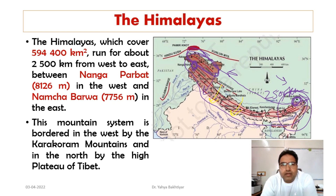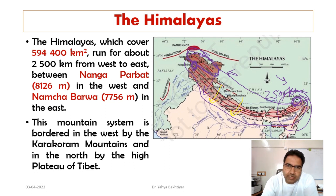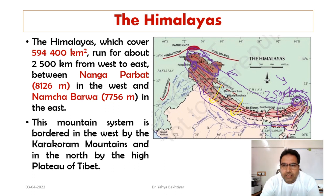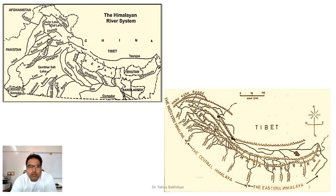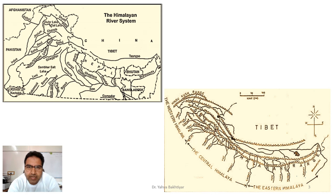One can distinguish four parallel and longitudinal mountain belts of varying width, each having distinct physiographic features and its own geological history — the Shivaliks, the Lesser Himalayas, and the Greater Himalayas. The Himalayas are drained by almost 19 major rivers.